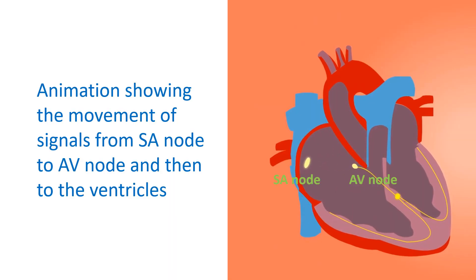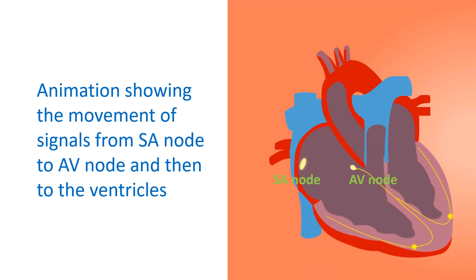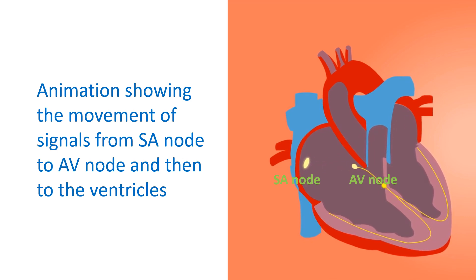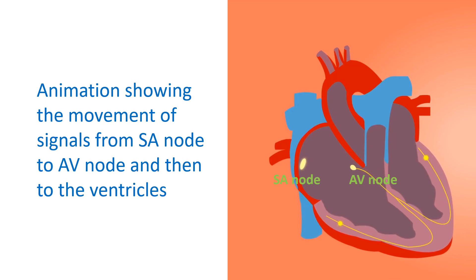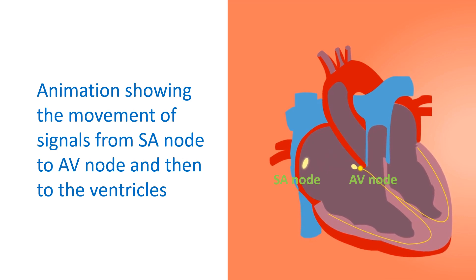The AV node is situated in the lower part of the right atrium, near the junction of the upper and lower chambers of the heart. Electrical signals reaching the AV node from the SA node are delayed for a short period – usually less than one fifth of a second – before they are transmitted to the lower chambers. This delay is needed for the contraction and emptying of the upper chambers before the lower chambers start contracting.